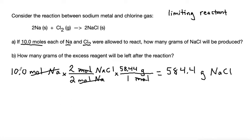So what that's telling me is that if all of my Na were to be consumed, I would produce 584.4 grams of NaCl. Now let's do the same with our chlorine.